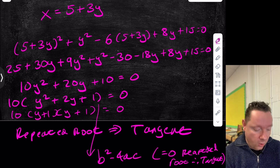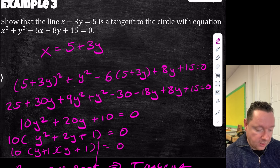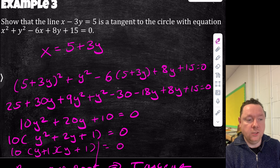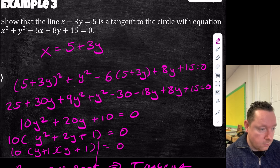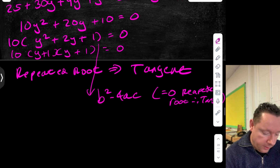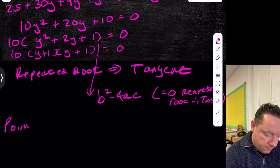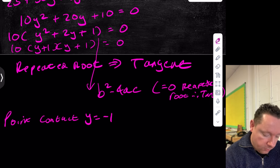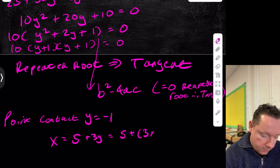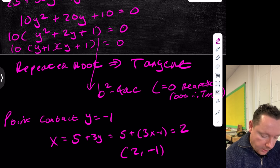Alternatively, you can check b² − 4ac on the quadratic. If b² − 4ac = 0, there's a repeated root and therefore it's a tangent. Either method is valid.